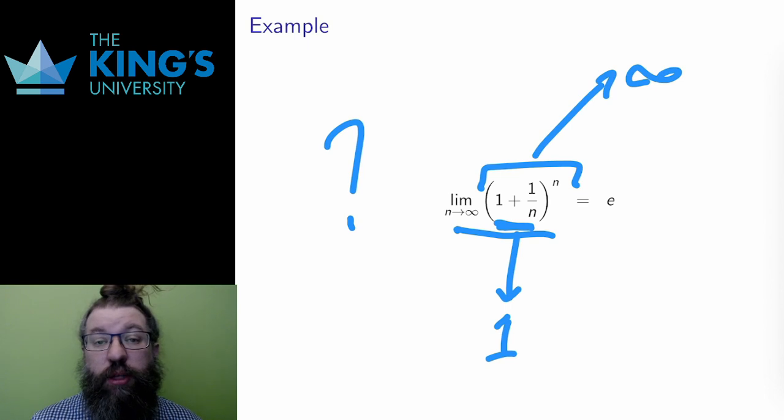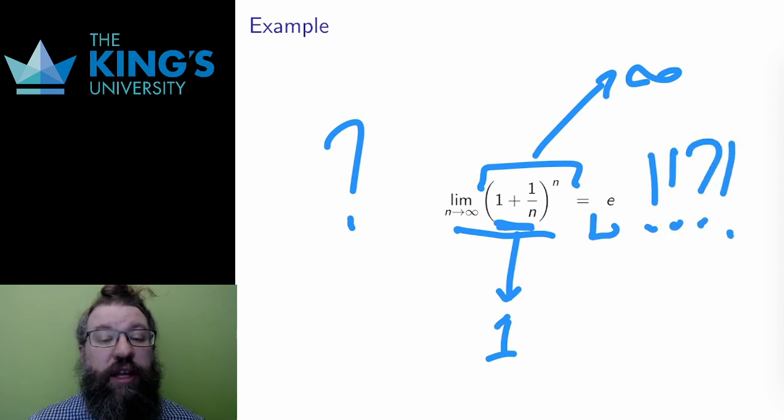Well, strangely, the limit balances out somewhere in between. And this limit turns out to be precisely the number e, the special exponential base. I'm not going to prove it here, but this limit can be taken as an alternative definition of this special number e.